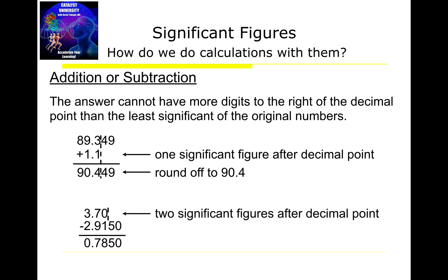Now the subtraction problem works the exact same way. We subtract 3.70 minus 2.9150. The first number has two digits after the decimal point, whereas the second has four. I go with the smaller one, so my final answer can only have two digits after the decimal point. The calculator gives 0.7850, but rounding to the hundredths place — where the 5 causes the 8 to round up — gives a final answer of 0.79.